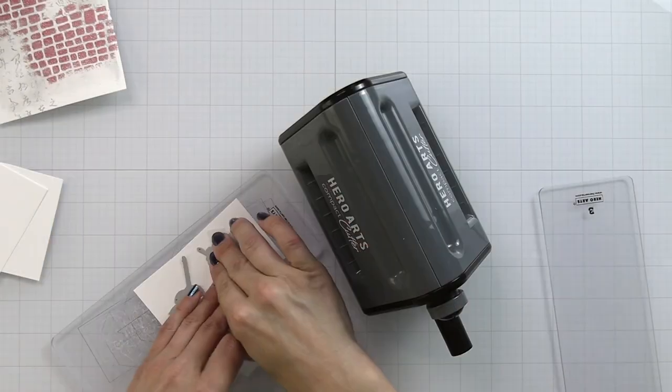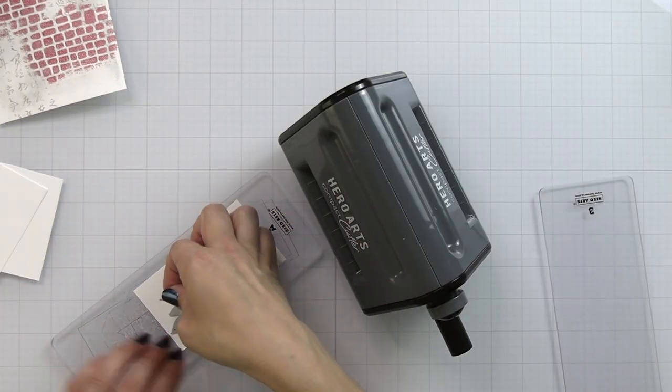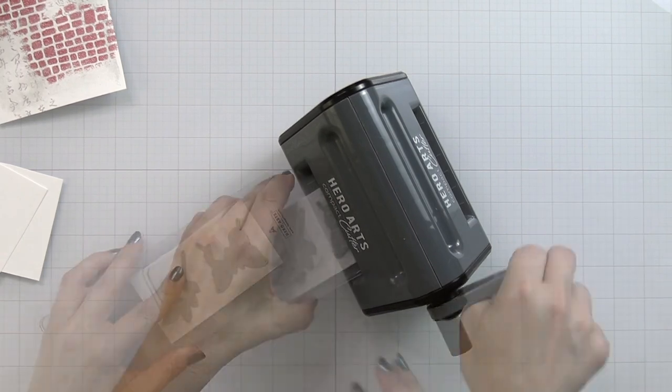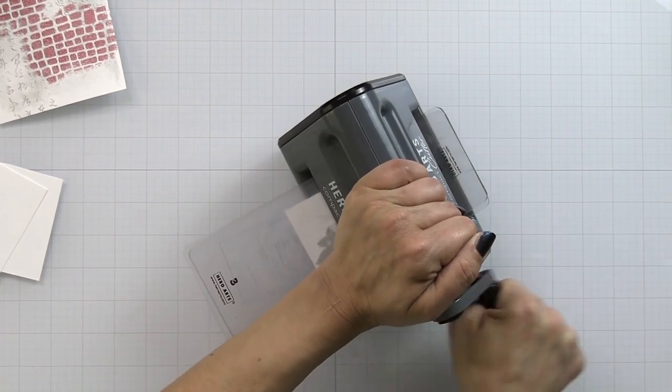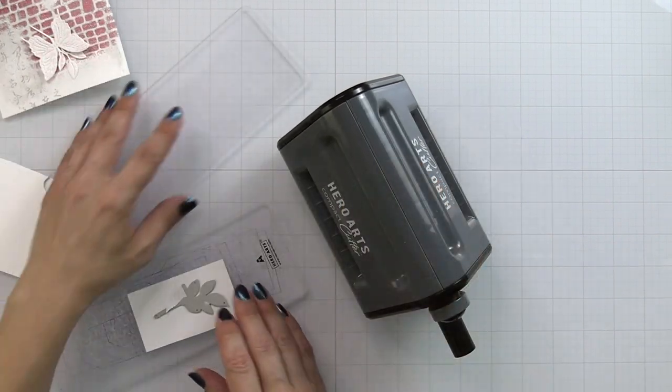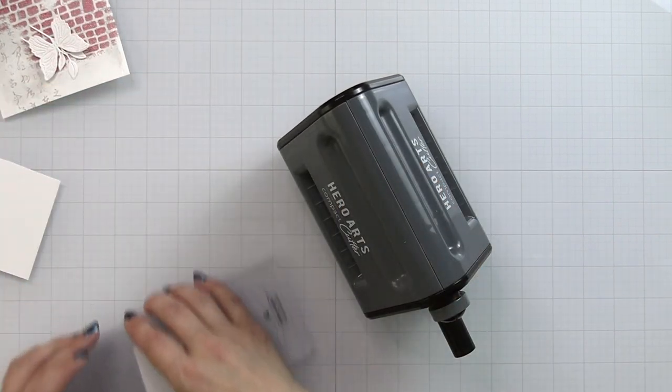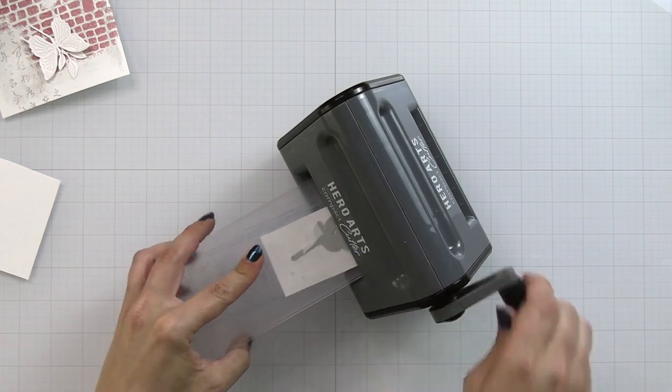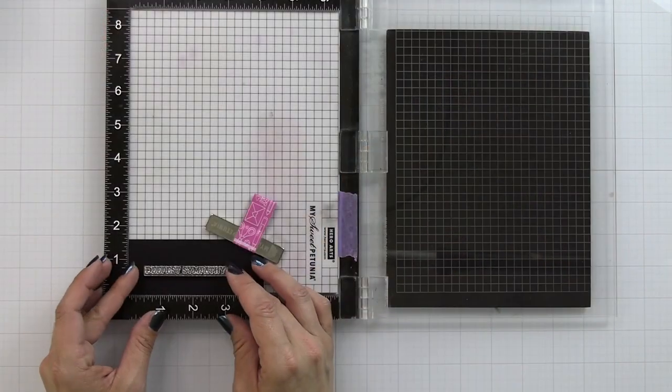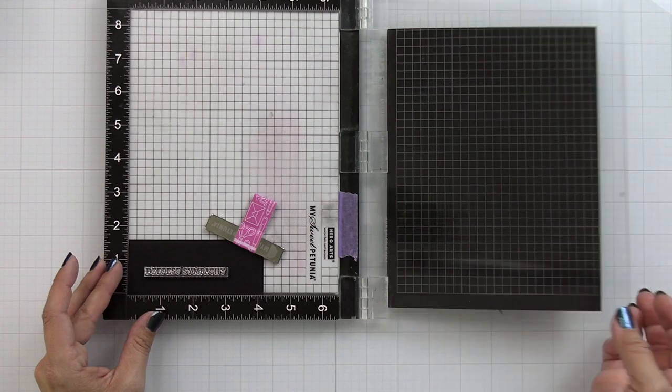For some additional elements to the front of my card I'm die cutting the butterfly and this leaf from the envelope accessories. I'm going to run this through my Hero Arts compact cutter. I'm just die cutting them out of deluxe white cardstock and I also have another leaf. I need two leaves for the front of my card.